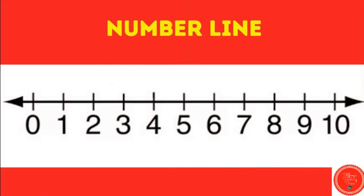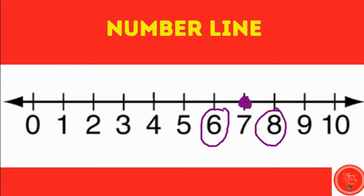Number line. Can you find seven on this number line? Seven is here. What number comes before seven? The number six. What number comes after seven? The number eight.